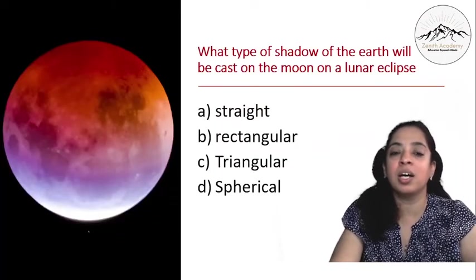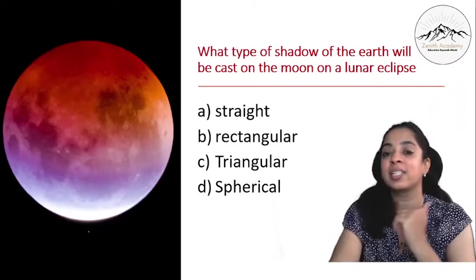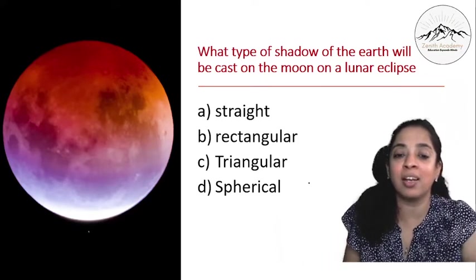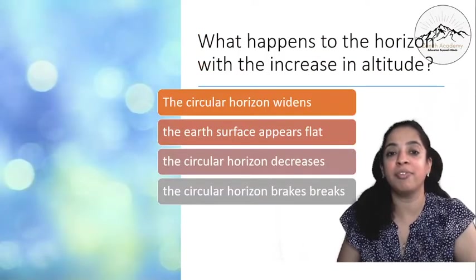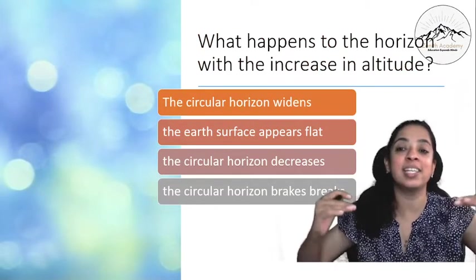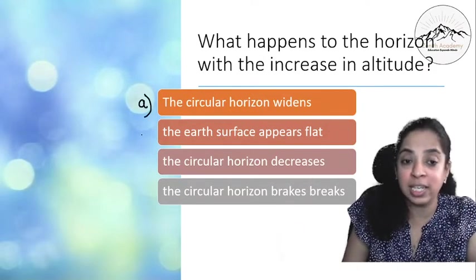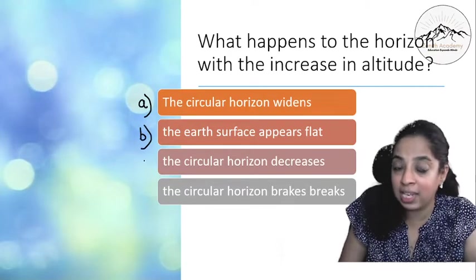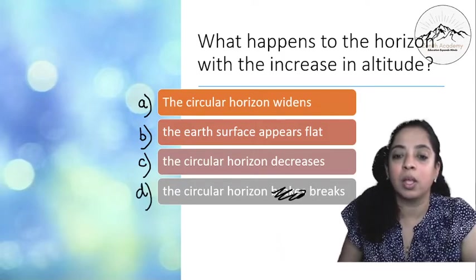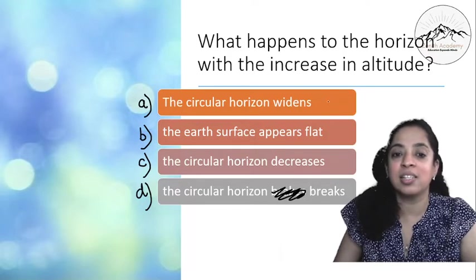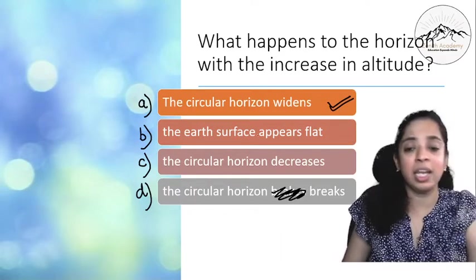What type of shadow of the Earth will be cast on the Moon on a lunar eclipse? So yes it is spherical. So do the diagrams very carefully. What happens to the horizon with the increase in altitude? As altitude grows, what happens to the horizon? The circular horizon widens, or the Earth's surface appears black, or the circular horizon decreases, or the circular horizon breaks? So what is the correct answer? The circular horizon widens. This is the correct answer.